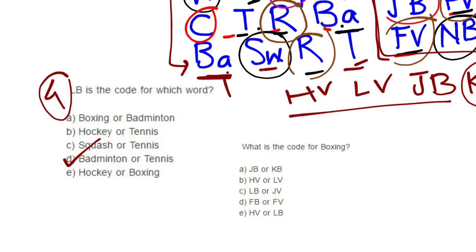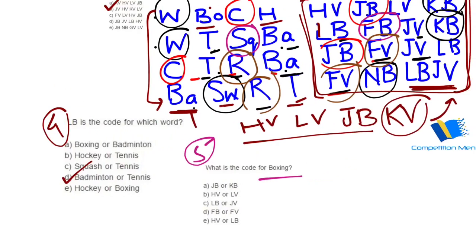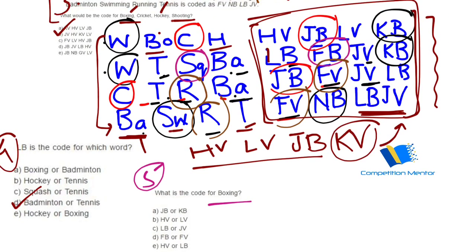Question number five: what is the code for boxing? Did we get any code for boxing and hockey? No. So it is either HV or LV — that is option number two. Hence we have solved all the cases.